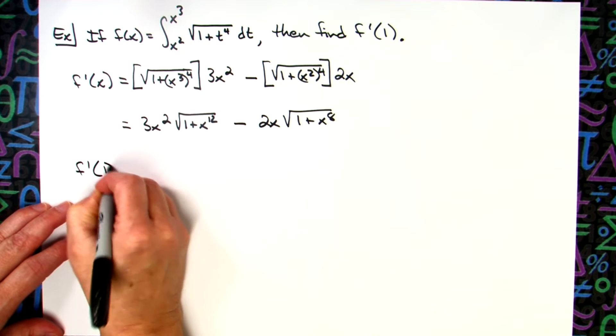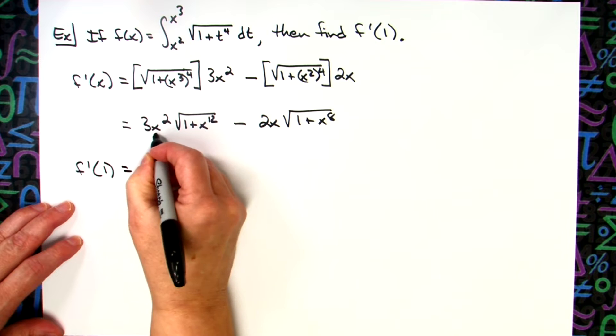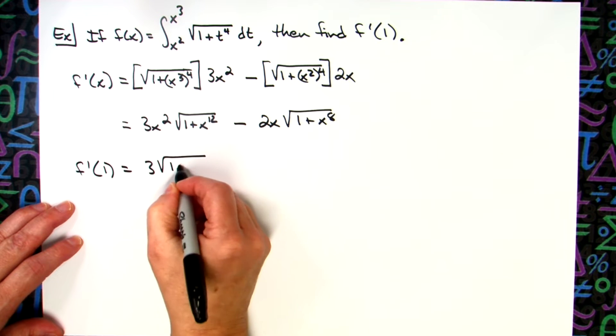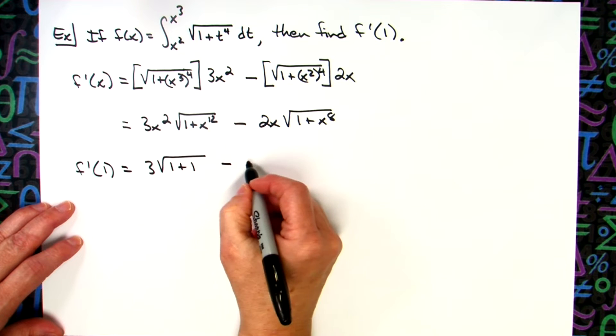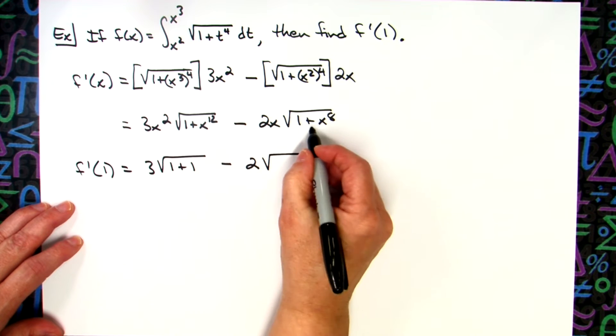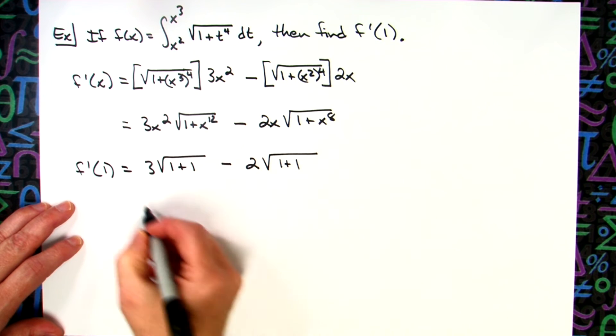So f prime of 1. So 3 times 1 squared is going to be 3 times the square root of basically 1 plus 1, minus 2 times 1 will give us 2 on the outside, square root of 1 plus another 1 there on the inside.